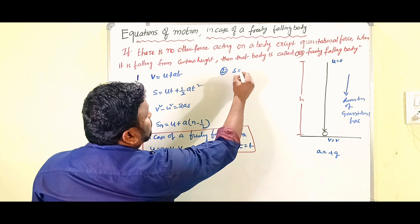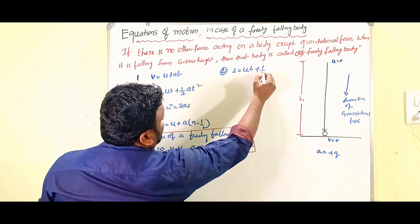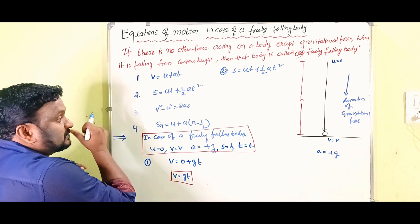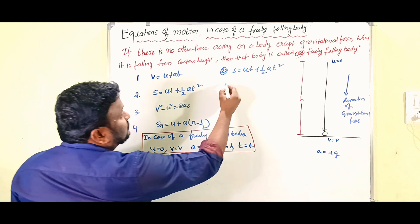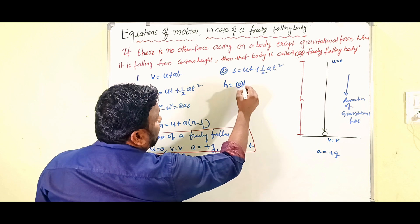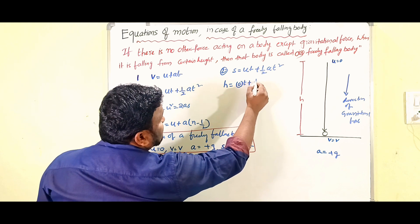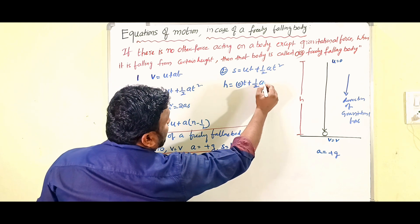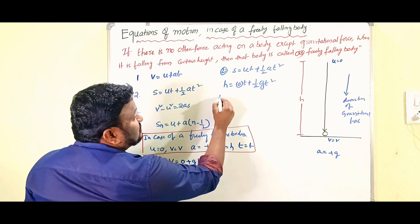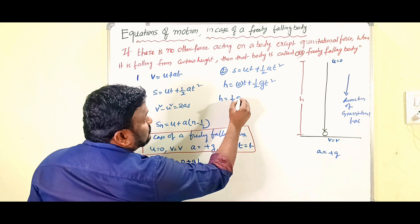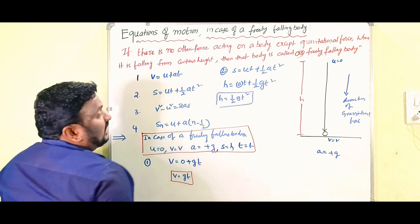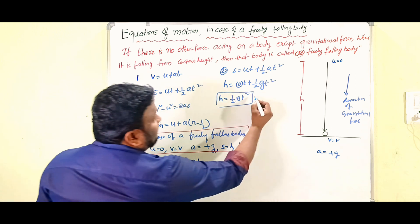Second equation: s equals ut plus half at squared. Here s becomes h, u is 0, and a is g. So: h equals 0 into t plus half into g into t squared. Therefore, h equals half g t squared.